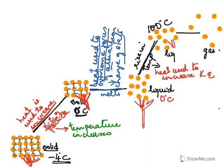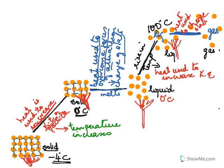At 100 degrees Celsius, you continue heating and all the liquid water becomes gas. Here again the temperature remains constant because the heat is used to overcome the forces of attraction and to change the state. In both these plateau areas, there is no rise in temperature because the heat is used to overcome the forces of attraction.